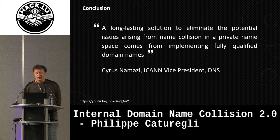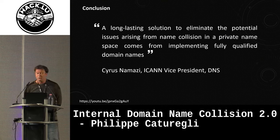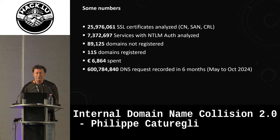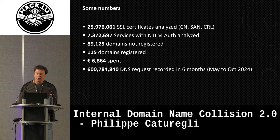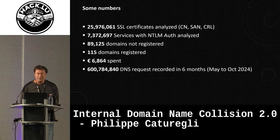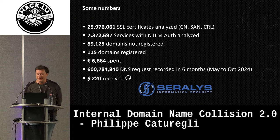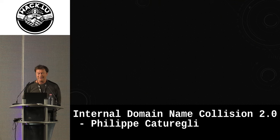In conclusion, I'll quote the VP of ICANN in charge of DNS, who said a long-lasting solution to eliminate issues from name collision comes from implementing a fully qualified domain name — and we'd add: that you actually registered. Some numbers from throughout the research: we analyzed about 25–26 million certificates, about 7 million NTLM banners or extracted domain names, found 89,000 domains not registered, registered about 215 of them — we can't register all of them, we've already spent 6,000 euros on this — and recorded about 600 million DNS records over the past six months. We got $220 back for the domains, so it's not really worth it financially. Thanks to my company for sponsoring this research.